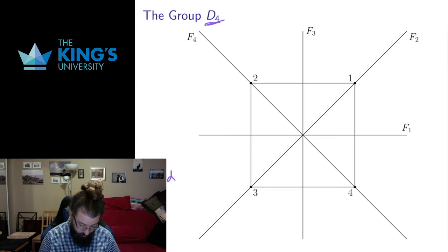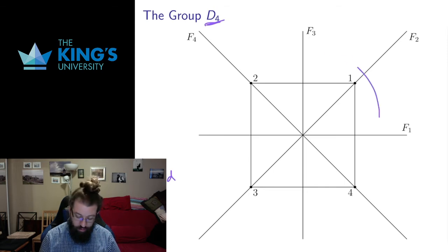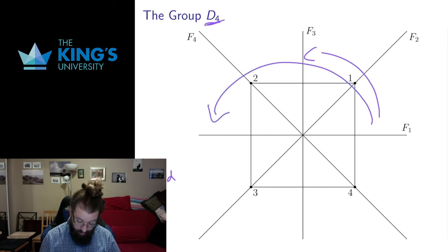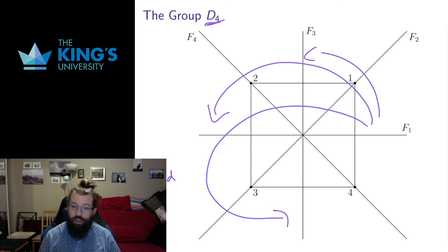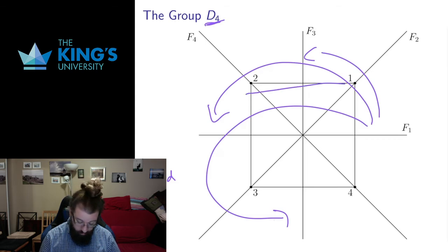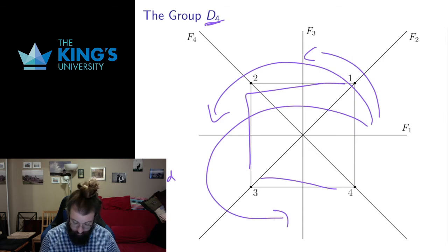In D4 I'm going to identify eight elements. I have the identity — the transformation that does nothing. I have three rotations: a quarter turn, a half turn, and three quarters of a turn. Each of those rotations takes this square with vertices 1, 2, 3, and 4 and returns it to the same square in the same spot. The vertices will be moved, but it traces out the same shape. The square is preserved under those rotations.